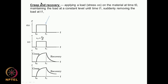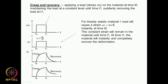Another important property is called creep and recovery. Suppose I apply a load sigma-0 at time T0, maintain that load up to time T1, and then remove the load at T1. For a normal material like stainless steel or titanium, the strain epsilon is simply sigma-0 divided by E — it immediately reaches a strain value, remains constant while stress is maintained, then falls immediately when the stress is removed. This is the constant strain behavior that many metals will exhibit.